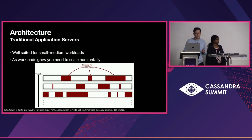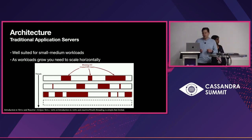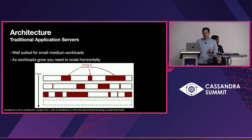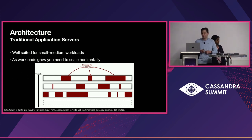We can see in the slide how we have multiple threads, and in red we have these blocking I/O operations. Traditional application servers are well-suited for medium workloads, but as workloads grow you need to scale horizontally — you need to add more resources and more boxes to handle more requests.